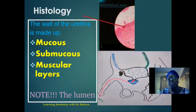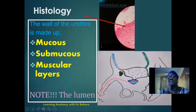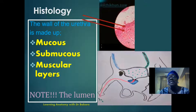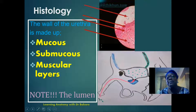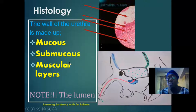The mucosal lining is the most internal layer, basically made up of epithelium lining. The second layer is the submucosal layer, seen below the mucosal layer. The third layer is the muscular layer, made up of smooth muscle. The central lumen of the urethra is the region where urine is transported through. We'll be taking these subdivisions one after the other to see what they are made up of.